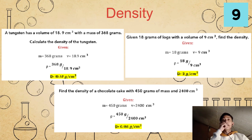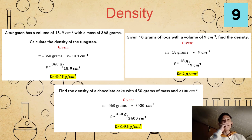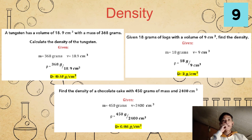For our density examples, first example: a tungsten has a volume of 18.9 cubic centimeters with a mass of 368 grams. Calculate the density of the tungsten. Given: mass equals 368 grams, volume equals 18.9 cubic centimeters. Using density equals mass over volume, we substitute: density equals 368 grams over 18.9 cubic centimeters. Our final answer is 19.47 grams per cubic centimeter.